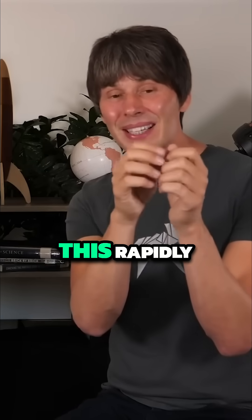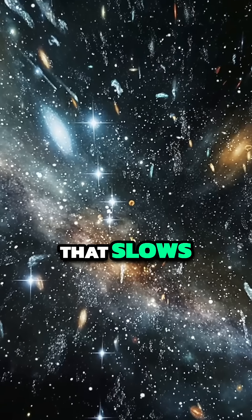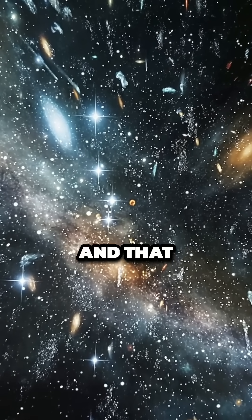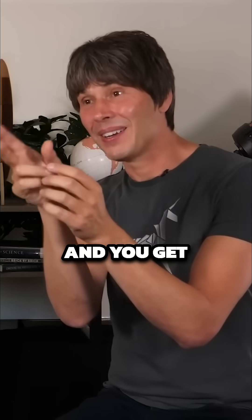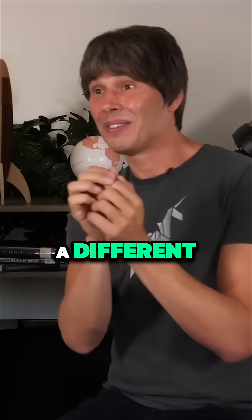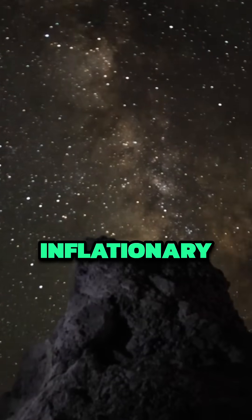And so you have a little patch of this rapidly expanding universe that slows down and makes a Big Bang. That would be our universe. And then the rest of it carries on, another little patch slows down and stops and you get another Big Bang and that would be a different universe. And so that's called the inflationary multiverse.